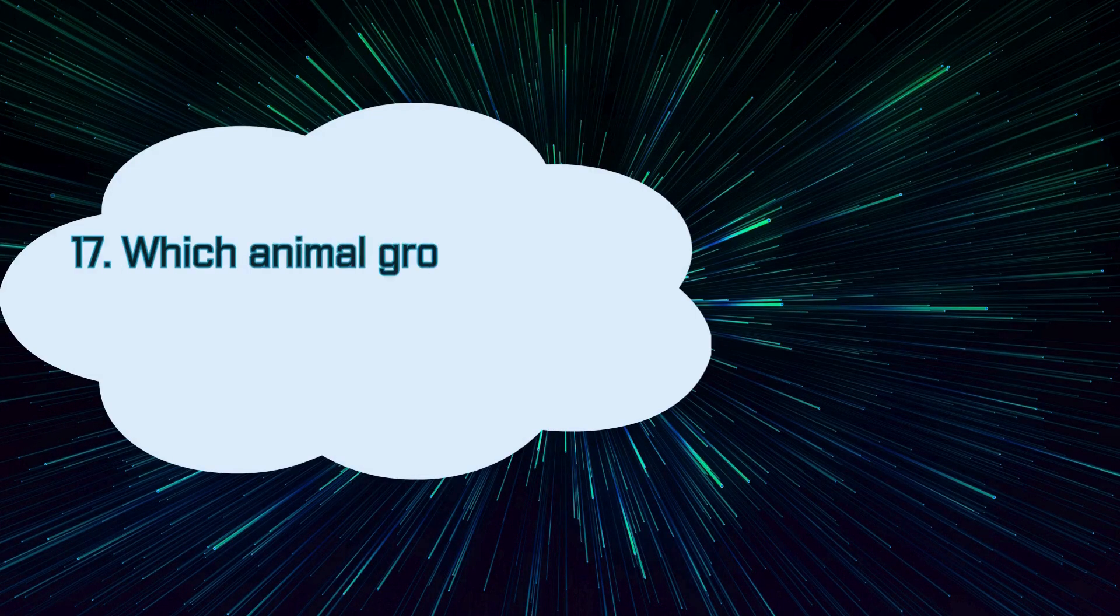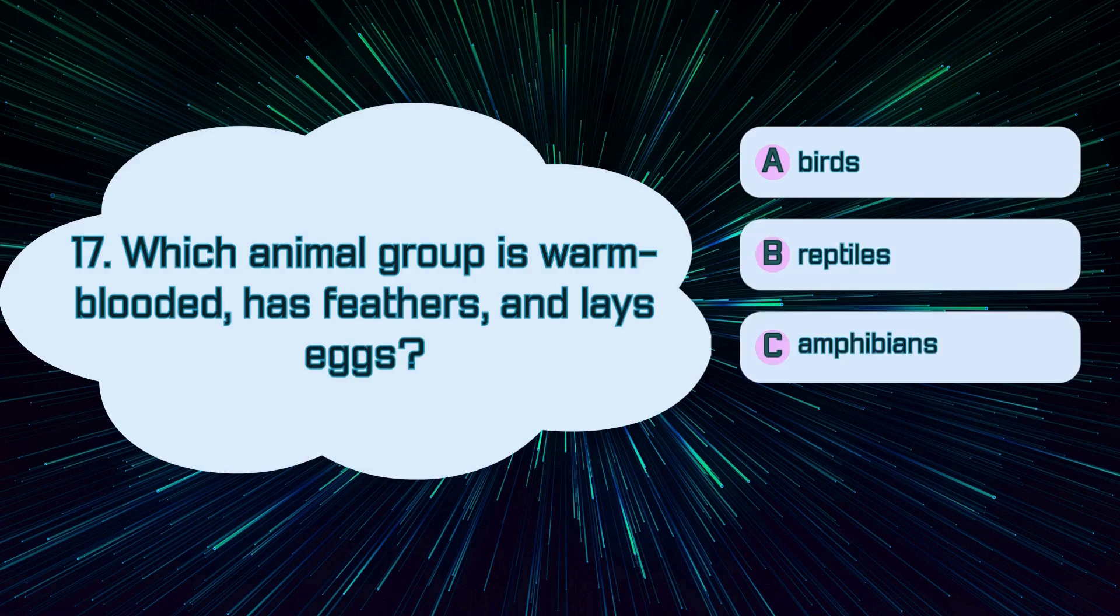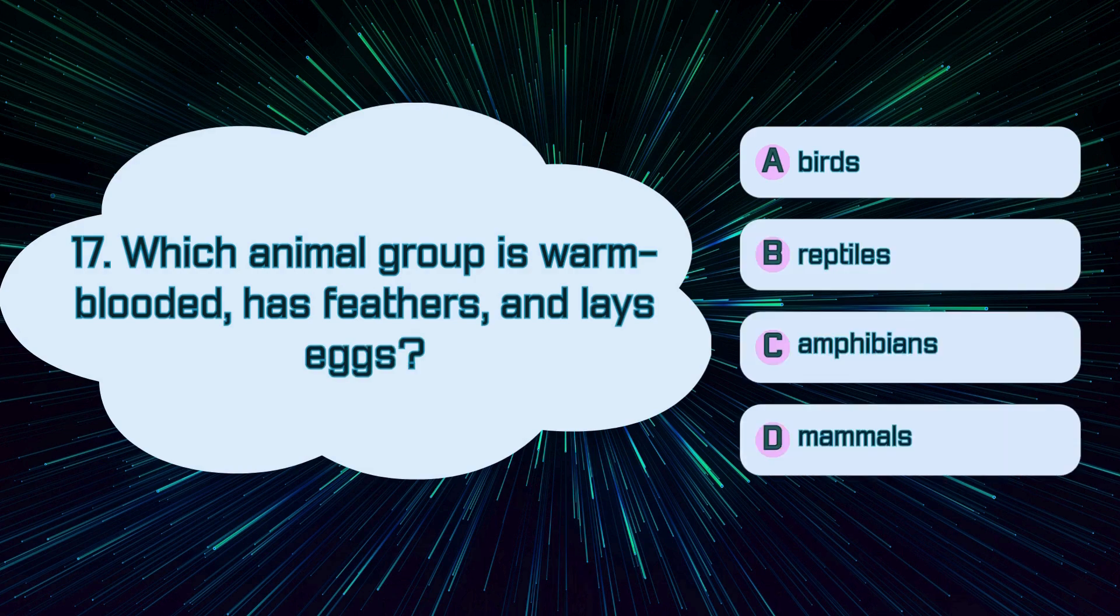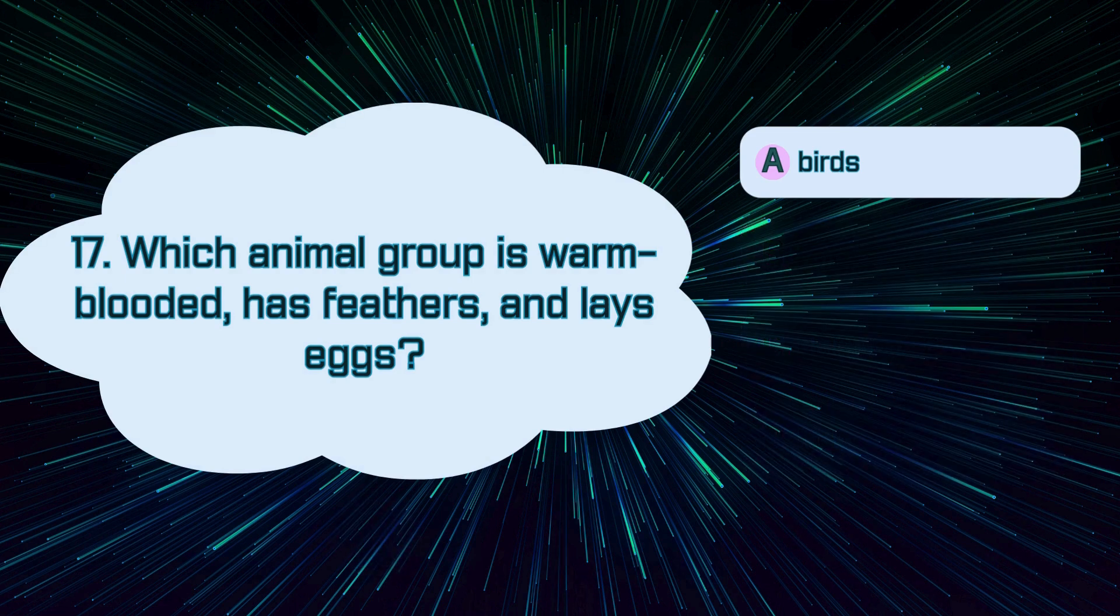Number 18. Which animal group is warm-blooded, has feathers, and lays eggs? A. Birds, B. Reptiles, C. Amphibians, D. Mammals. The correct answer is A. Birds.